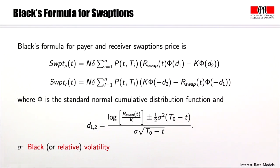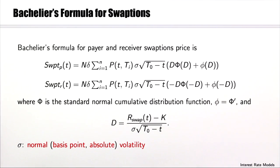Bachelier's formula for payer and receiver swaption prices is shown here, where Phi is the standard normal cumulative distribution function, small phi is the normal density, and the parameter capital D is given here. Again, there is a single volatility parameter sigma, called the normal volatility.